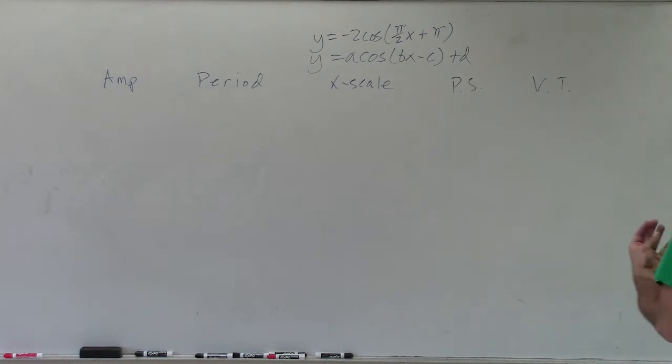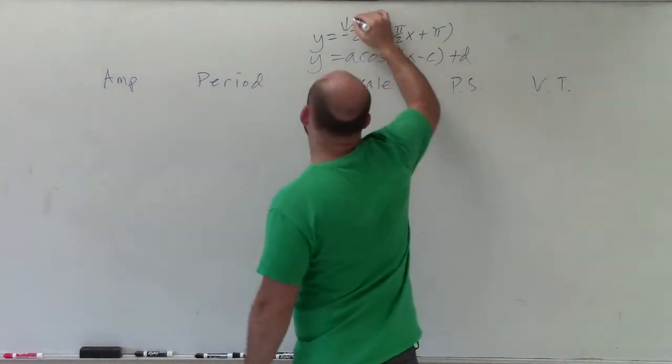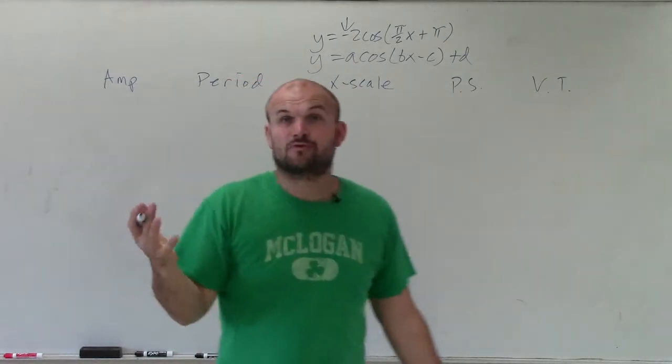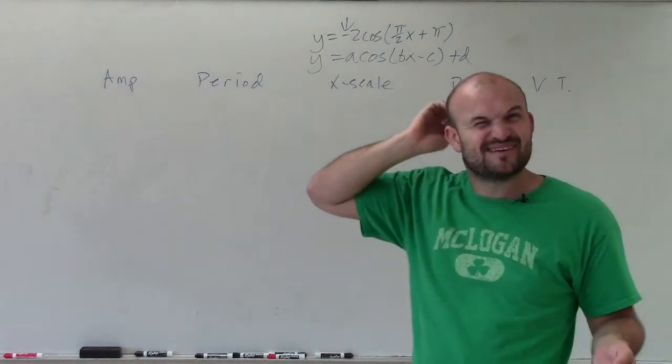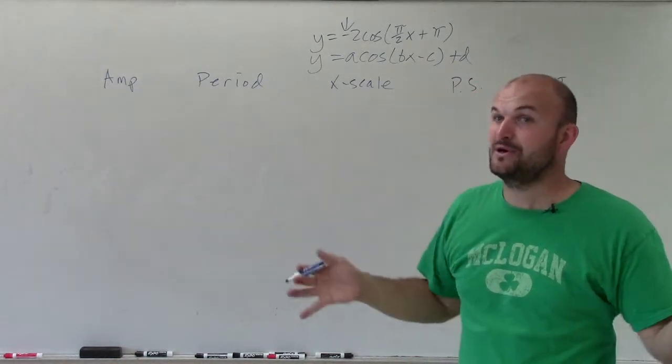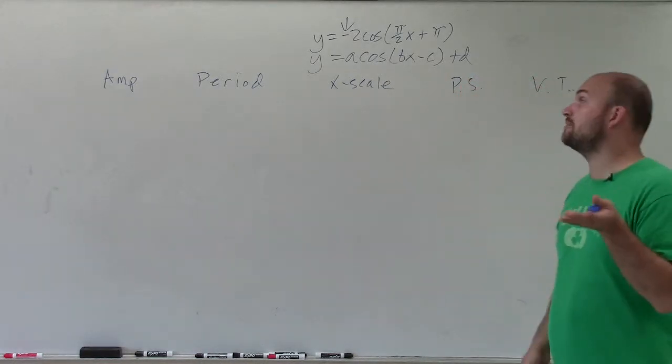So when looking at this, one thing I also do notice is I have a negative, right? So that's going to tell me that I'm going to have a reflection over the x-axis. I don't usually write that in there. It's just one thing I kind of have to remember, which we know can cause problems. So maybe that's something I'll have to include. But make sure always look for a reflection.